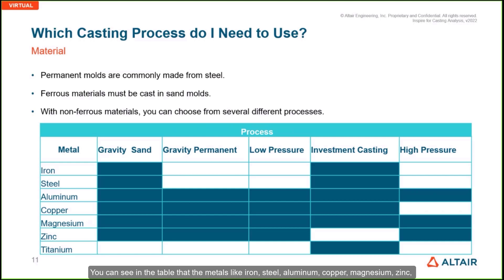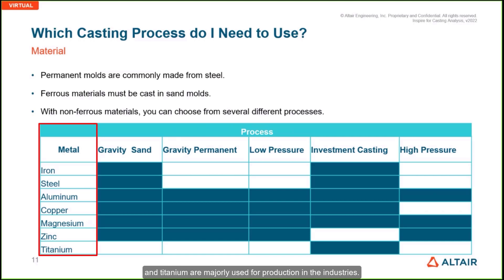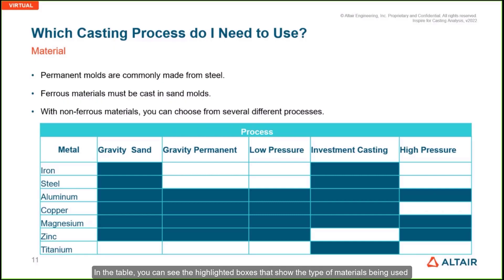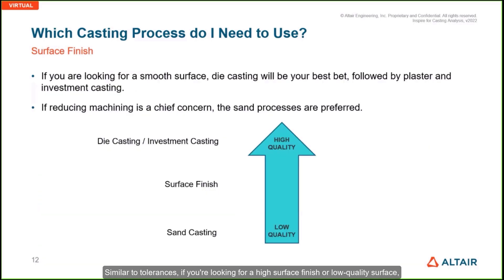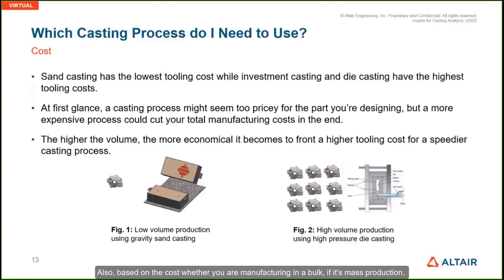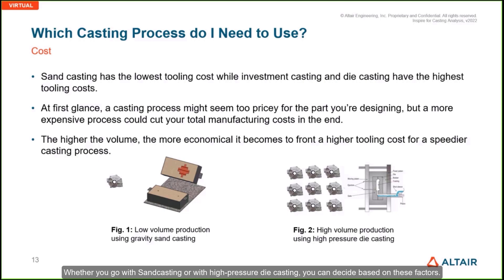You can see in the table that metals like iron, steel, aluminum, copper, magnesium, zinc, and titanium are majorly used in industry. All five major casting processes — gravity sand casting, low-pressure casting, high-pressure casting, investment casting, and gravity tilt or gravity permanent — are widely used. The highlighted boxes in the table show the materials used for each casting process. Similarly, based on surface finish requirements and cost considerations such as mass production or on-demand production, you can decide whether to go with sand casting or high-pressure die casting.